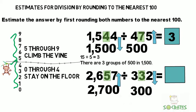So now that's easy. 27 divided by 3 equals 9. There are 9 groups of 300 in 2,700.